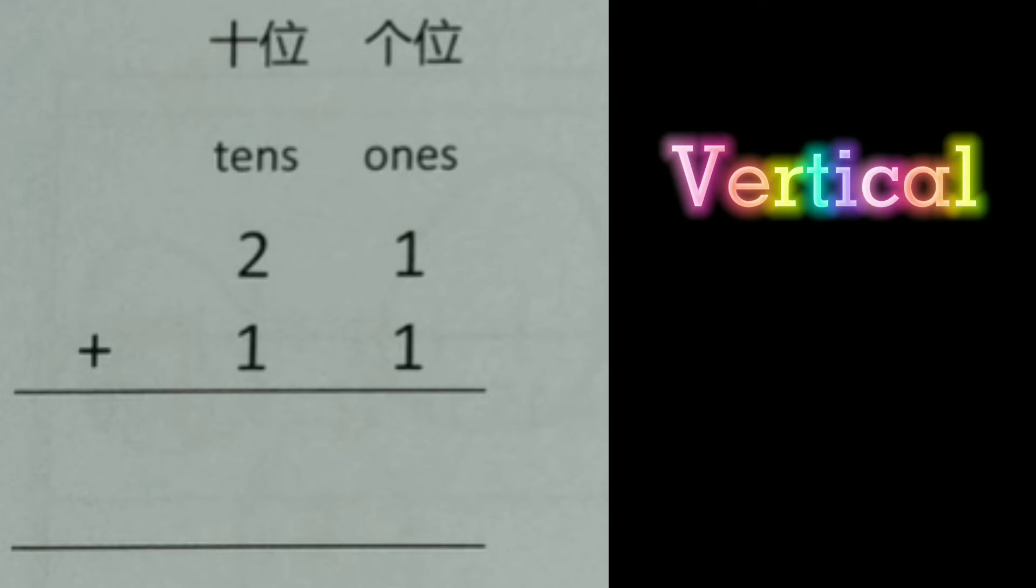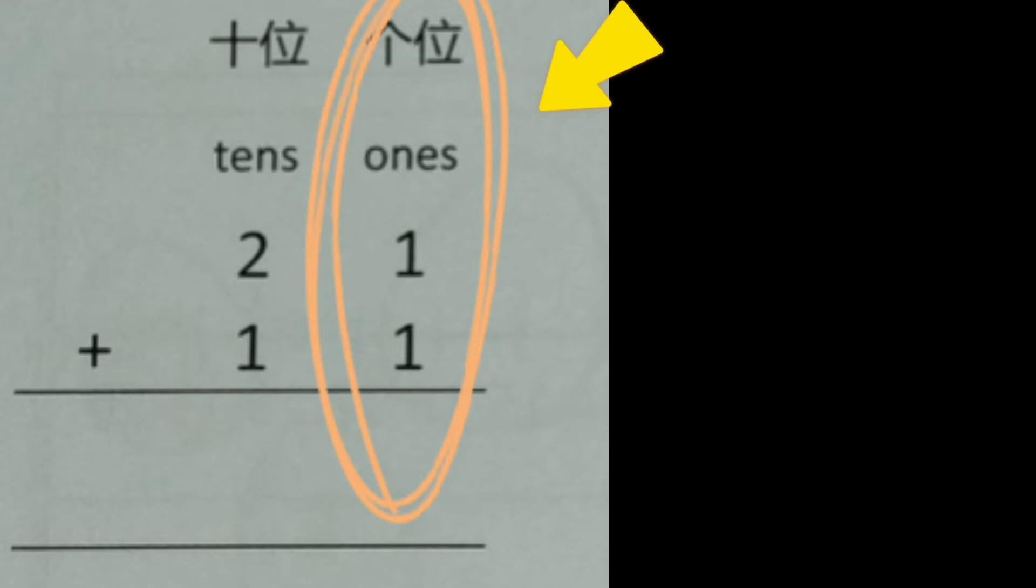These are ones. These are tens. 21 plus 11 equals how many?